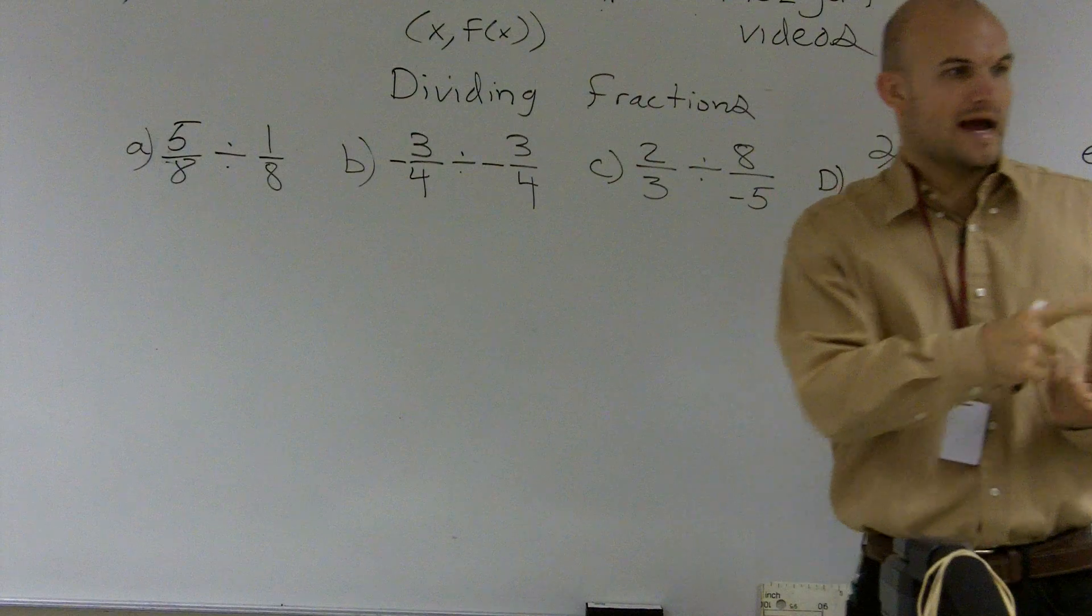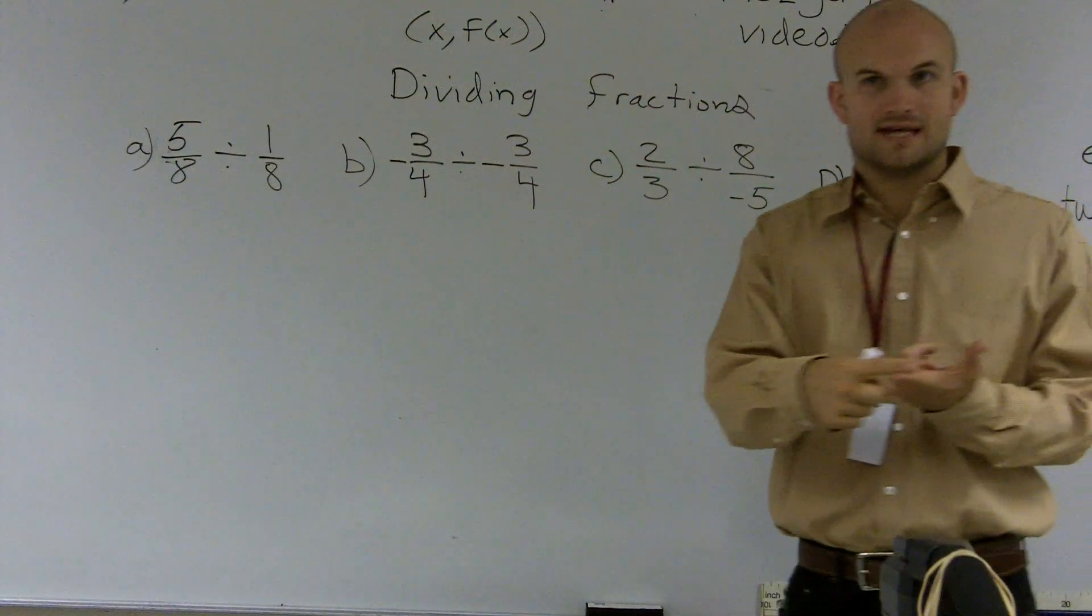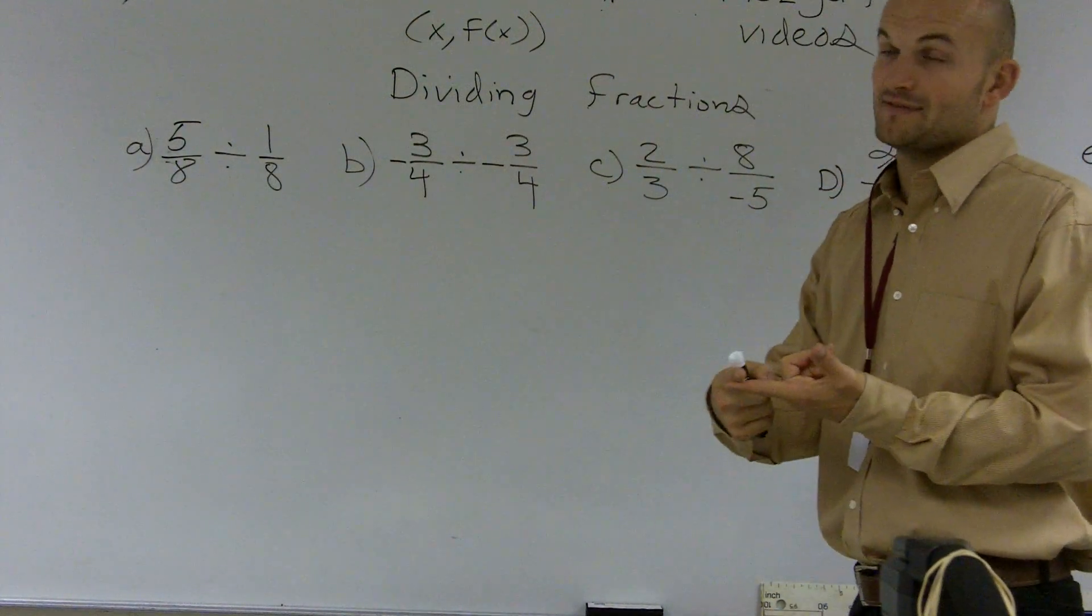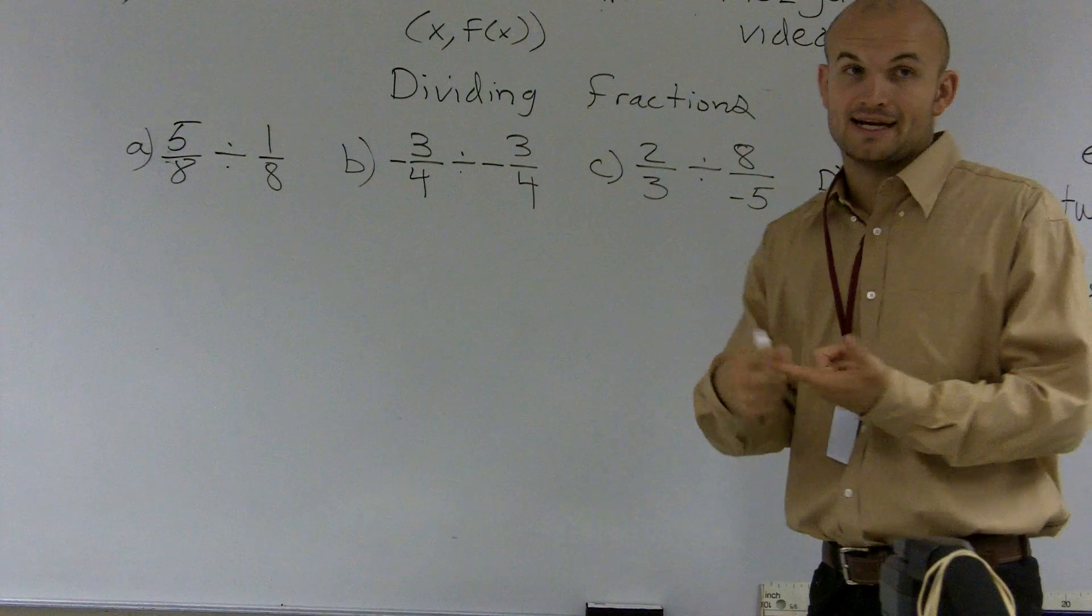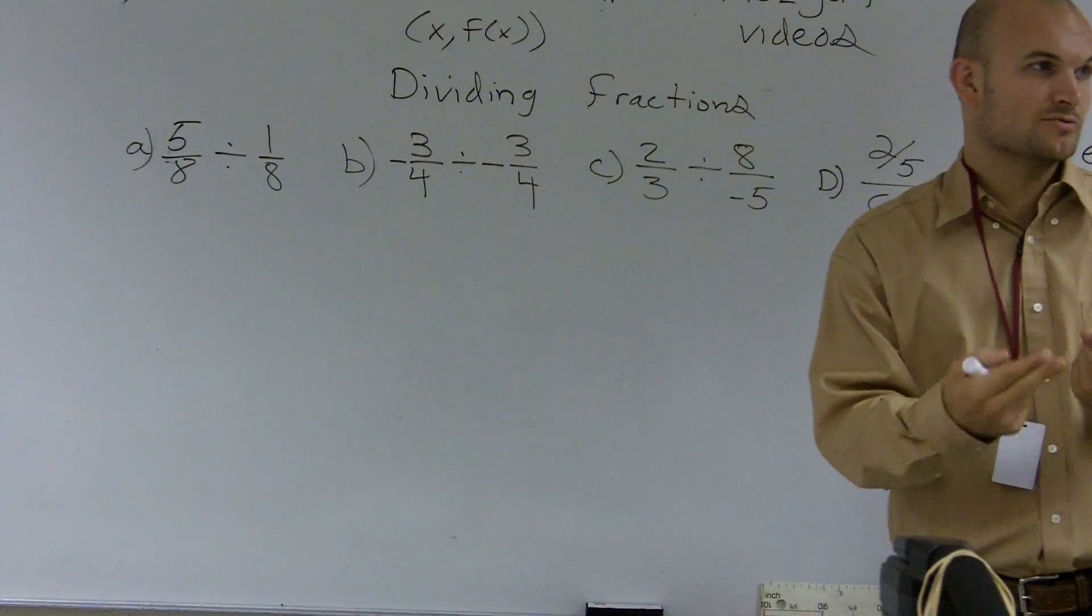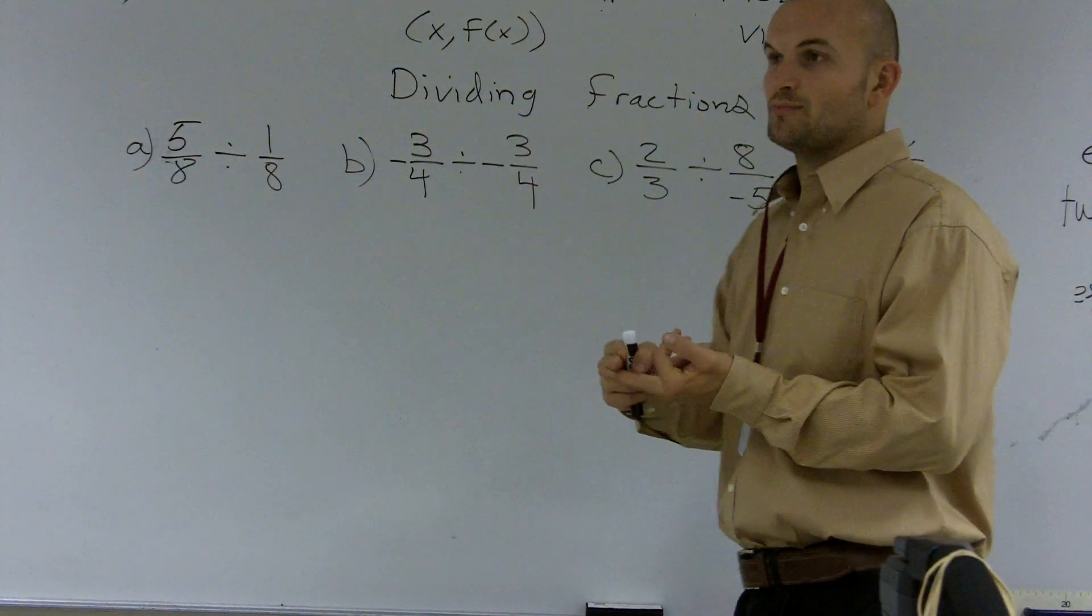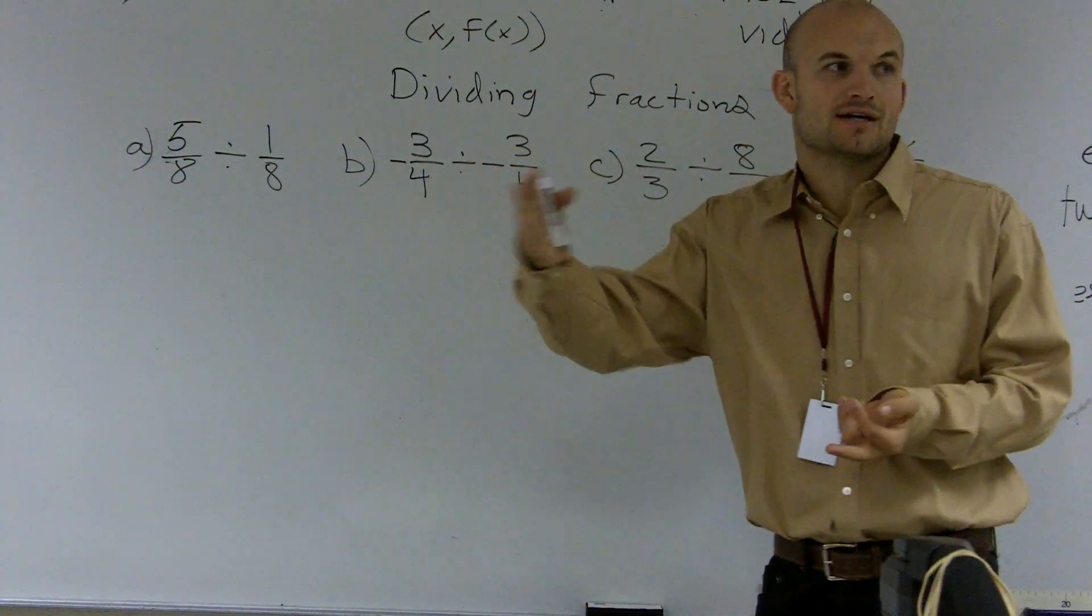Remember, adding fractions, you added the numerator, kept the denominator the same, right? They had to have the same denominator though. Adding and subtracting was the same thing. It's either you add or subtract the numerator, but the denominator had to be the same. Multiply fractions, you just multiply it across.